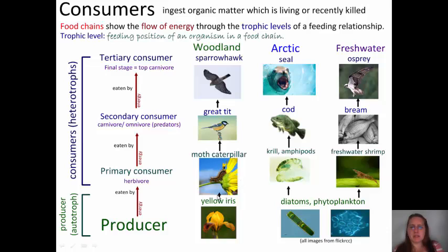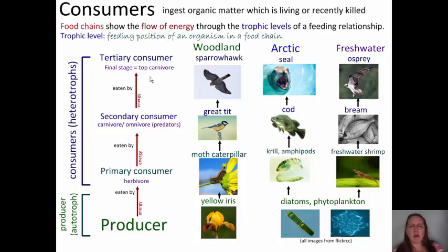In this case, the moth caterpillar eats the yellow iris, or krill eats the diatom, or freshwater shrimp eats the phytoplankton. The third trophic level is your secondary consumers — carnivores or omnivores. In this case, the great tit bird eats the moth caterpillar, which got its energy from the yellow iris. The fourth trophic level is the tertiary consumer — the top carnivore. Typically, most food chains cannot sustain more than a tertiary consumer, although there are exceptions.